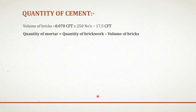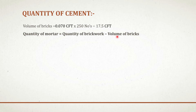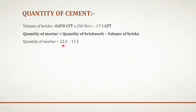To calculate the quantity of cement, we must know the quantity of mortar. Quantity of mortar equals to quantity of brickwork minus volume of the bricks. Volume of bricks equals to number of bricks multiplied by volume of one brick. Volume of one brick is 0.070 cubic foot and number of bricks is 250 (without wastage), so volume of bricks is 17.5 cubic foot. Therefore, quantity of mortar equals to 22.5 minus 17.5, which equals 5 cubic foot.